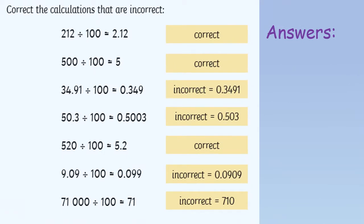And here are your answers. Remember to use a coloured pen or pencil to mark or correct your work. 212 divided by 100 is 2.12.